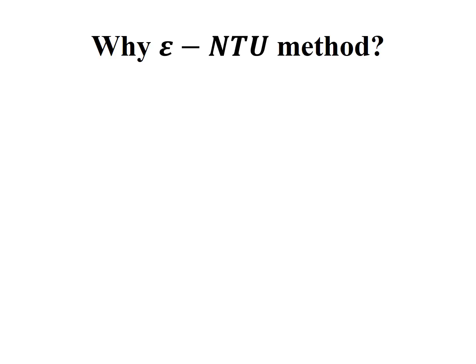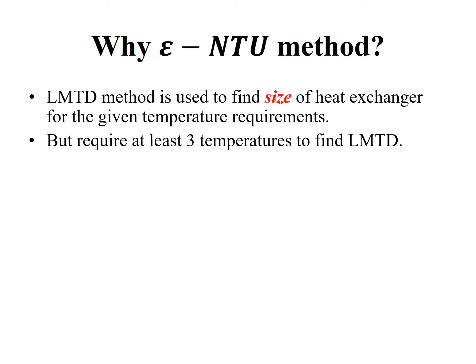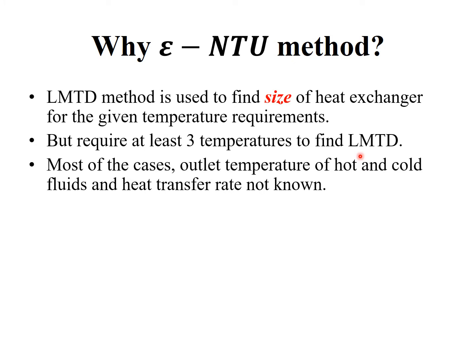Now let us see why the effectiveness-NTU method is required. In the last class we derived the LMTD expression for parallel and counter flow. The LMTD method is mainly used to find the size of a heat exchanger for given temperature requirements. You can use the LMTD method only when the temperatures of both hot and cold fluids — both inlet and outlet — and the heat transfer rate are known.